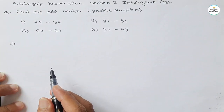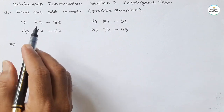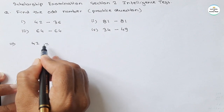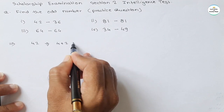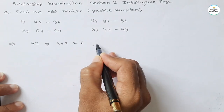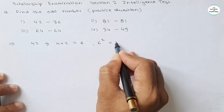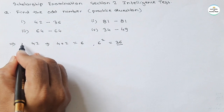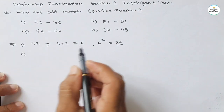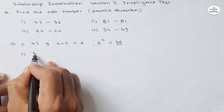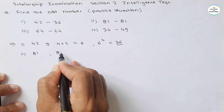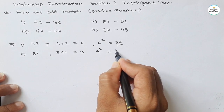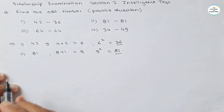Let's see our solution. First, look at the summation of digits of each number. First number is 42 — summation of digits: 4 plus 2 equals 6, and the square of 6 is 36. So we get 36 here, and here it is also 36. Now see the second one: 81 — summation of digits 8 plus 1 is 9, and the square of 9 is 81. So here also we are getting 81.